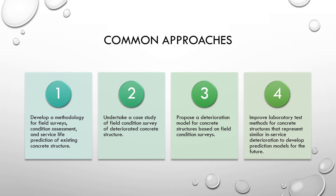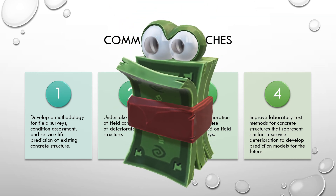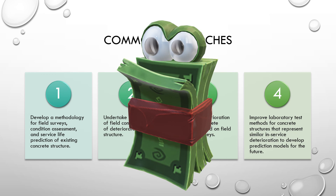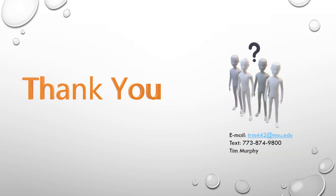The common approach throughout all of these items is: we need to look at field surveys and condition assessments to predict the life of a structure. Look at case studies — what you have in the field is going to tell the story. Propose a deterioration model. Improve the materials we use. Look at laboratory test results to determine whether we can make predictions of what's being built today, what has been built, and how long it should work — what we call prediction models of the future. It's all about money: how much you have and how much you spend is very important to understand. You have to balance the amount of money that's used. Thank you very much for listening; if you have any questions, feel free to email or text me.